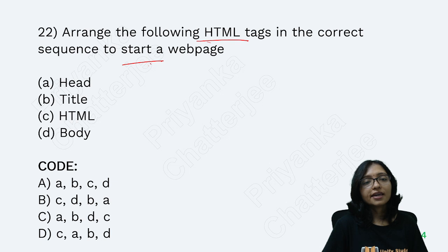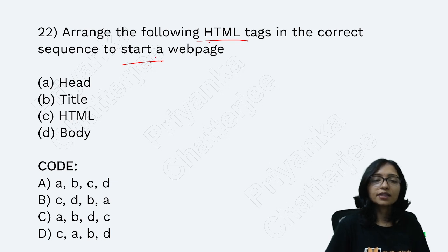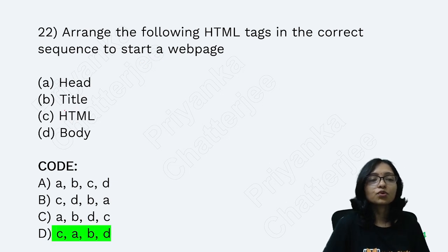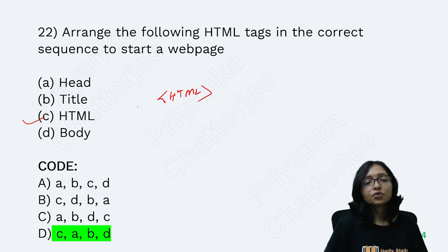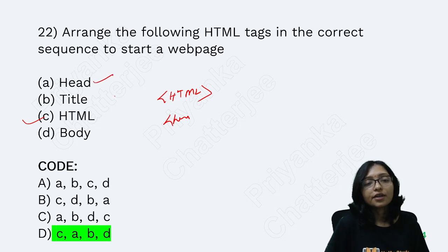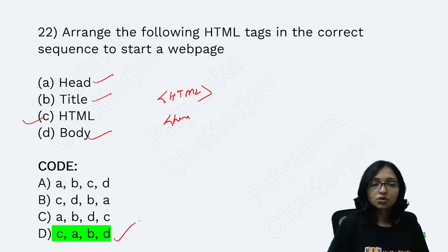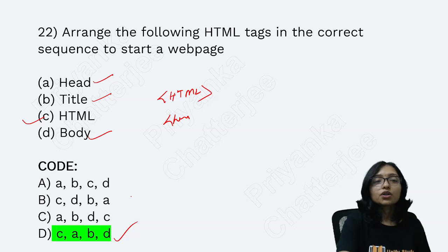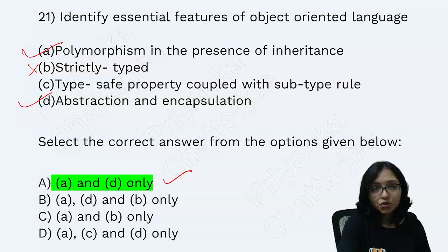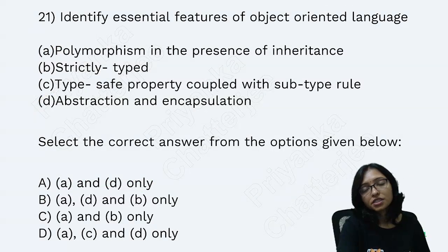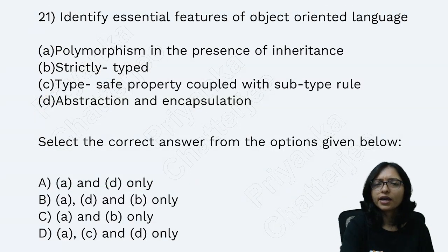For the HTML tag sequence, the correct order is: HTML → HEAD → TITLE → BODY. This is a straightforward sequence question, and that is the correct answer.